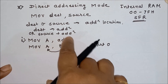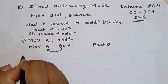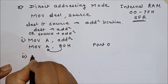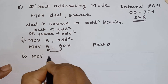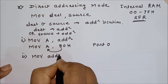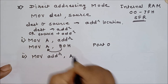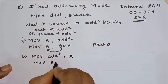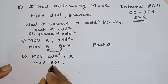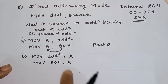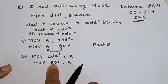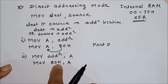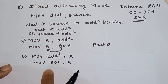The source can be an address location, and you can also use the destination as an address location. For example, MOV address, A — here the destination is A0H meaning Port 0, and the source is accumulator. So the contents of accumulator will be stored in Port 0, meaning accumulator contents will be placed on Port 0.